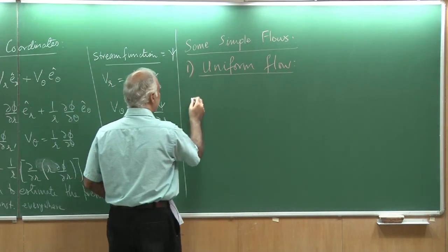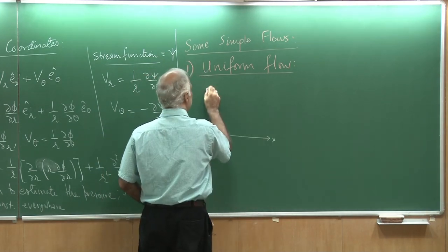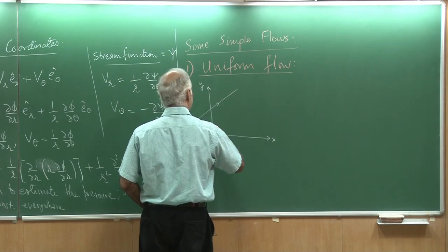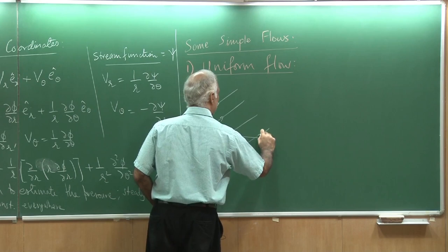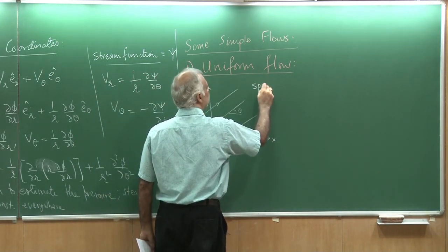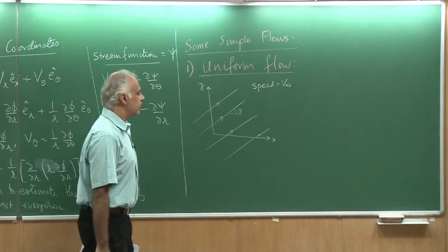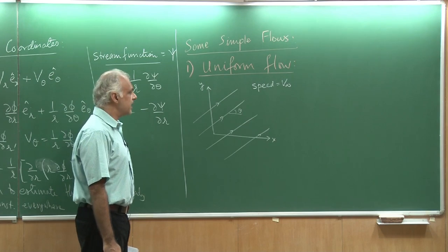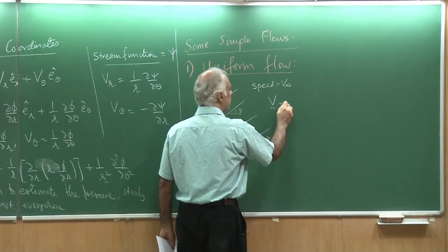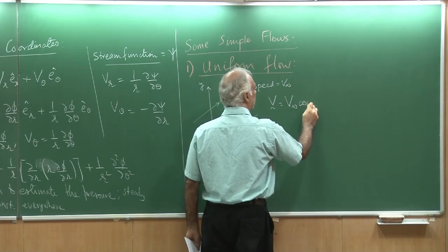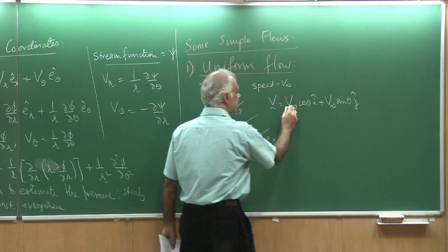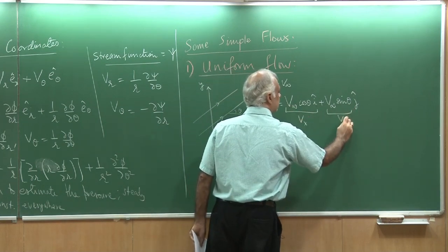For the uniform flow, the problem setup is as follows: I have a coordinate axis x and y, and a flow where the streamlines are aligned at an angle theta to the x-axis, with the speed of the flow being v-infinity. So the problem is to represent a flow which has speed v-infinity at an angle theta to the x-axis. I write my velocity vector as v-infinity cosine theta i plus v-infinity sine theta j, where this is v_x and this is v_y.